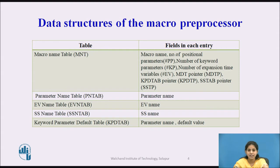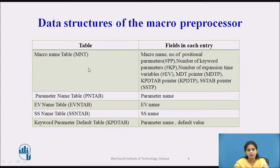Next we see the data structures of the micro preprocessor. There are nine data structures used in the micro preprocessor. They are organized into two fields: tables and the fields in each table. The first table is the Macro Name Table, represented as MNT.